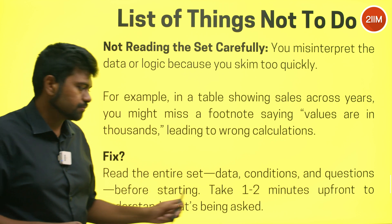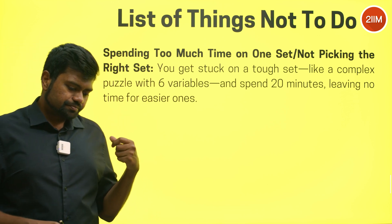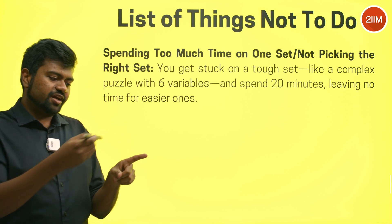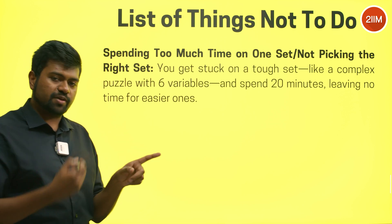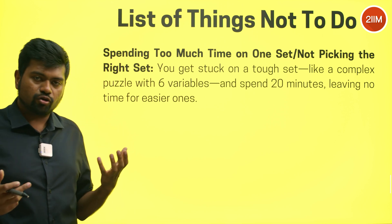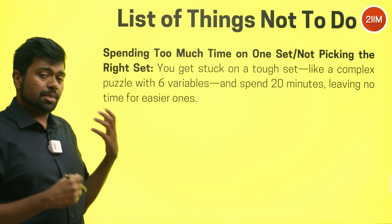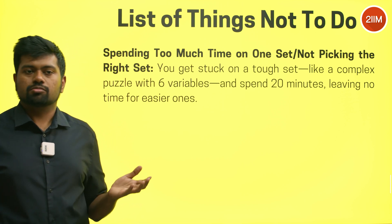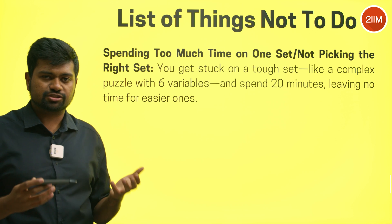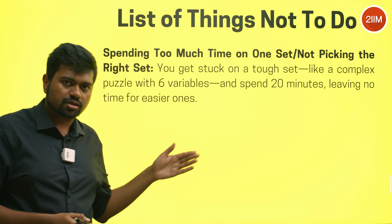Another common mistake: spending too much time on one set, or not picking the right set. Ego gets involved — the set isn't as easy as you thought, but you stick with it. Sometimes you get stuck on a complex puzzle with six or seven variables, the clues aren't straightforward, you can't eliminate much, and you waste 20–25 minutes. Then panic kicks in.